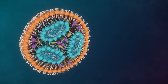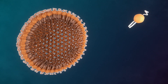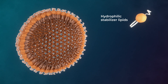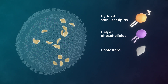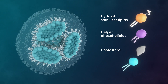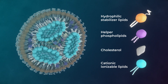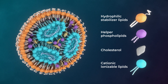Hydrophilic stabilizer lipids help regulate size and circulation time in the bloodstream. Helper phospholipids aid in stability, intracellular uptake, and endosomal escape. Cholesterol binds to apolipoprotein E and mediates endocytosis. Lastly, cationic ionizable lipids bind to the nucleic acid and shift charge with pH changes.